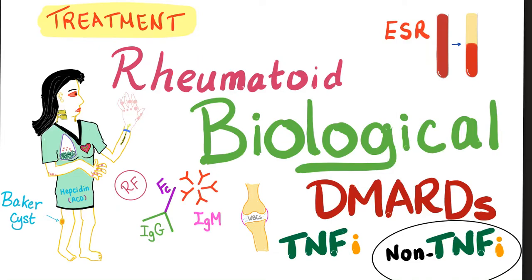It's Medicosis Perfectionalis and we're still talking about rheumatoid arthritis — how do we manage it? Today we'll talk about the non-TNF inhibitors, disease-modifying anti-rheumatic drugs. By rheumatic we mean anti-rheumatoid. Let's get started.